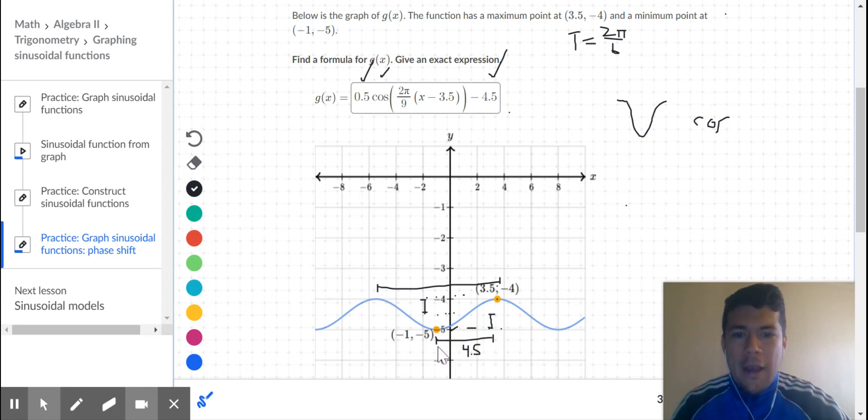So if half of the period is 4.5, then the full period must be 9. So 9 equals 2π over b.